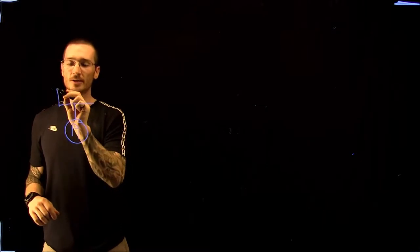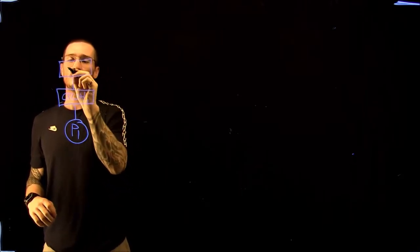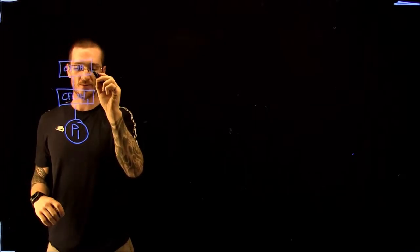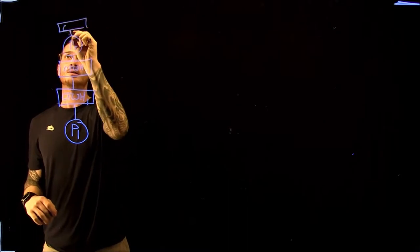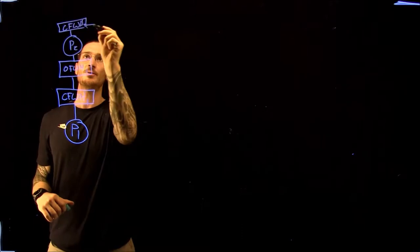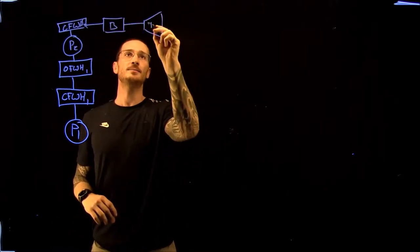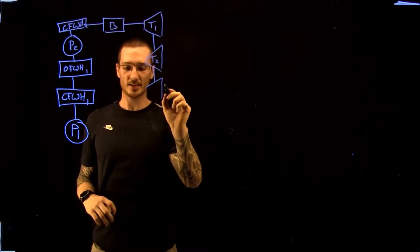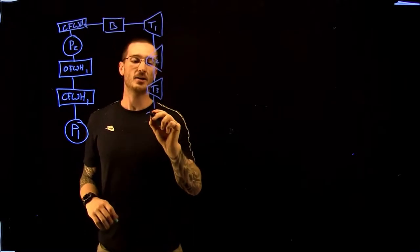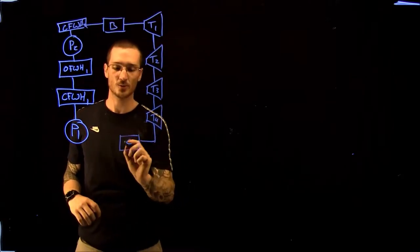Our cycle starts off with pump 1 going to a closed feed water heater — we'll call this closed feed water heater 1. It then goes into open feed water heater 1, then to pump 2, then to another closed feed water heater — closed feed water heater 2 — then into the boiler. It goes through our first turbine, steam is extracted before the second turbine, extracted again before the third turbine, and a last extraction happens before the fourth turbine. Then the steam goes through the condenser and back to the pump.